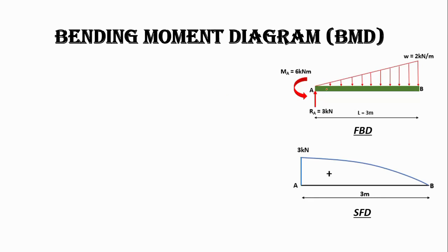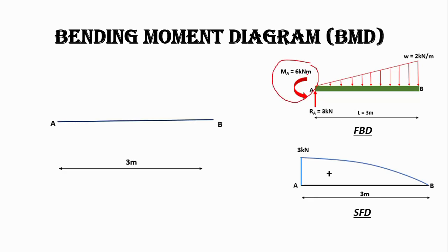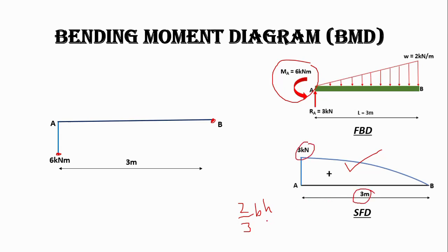Let's draw the bending moment diagram. At support A we have a bending moment of 6 kilonewton meters in the anti-clockwise direction, so we draw a straight line downward of 6 kilonewton meters. To join the two points, the area of the shear force diagram shape is calculated as 2/3 × base × height, where base is 3 meters and height is 3 kilonewton. After calculation, 2 × 3 = 6 kilonewton meters. We join these two points with a curve, giving a maximum bending moment of 6 kilonewton meters. This is the negative bending moment diagram.